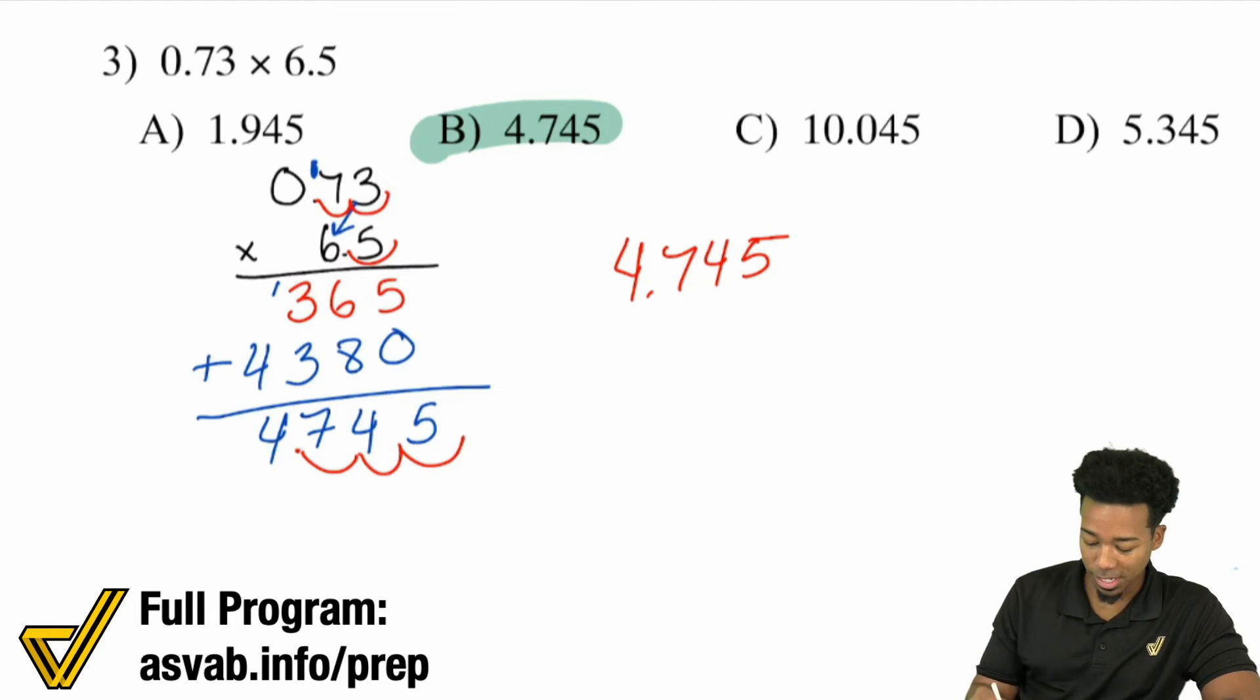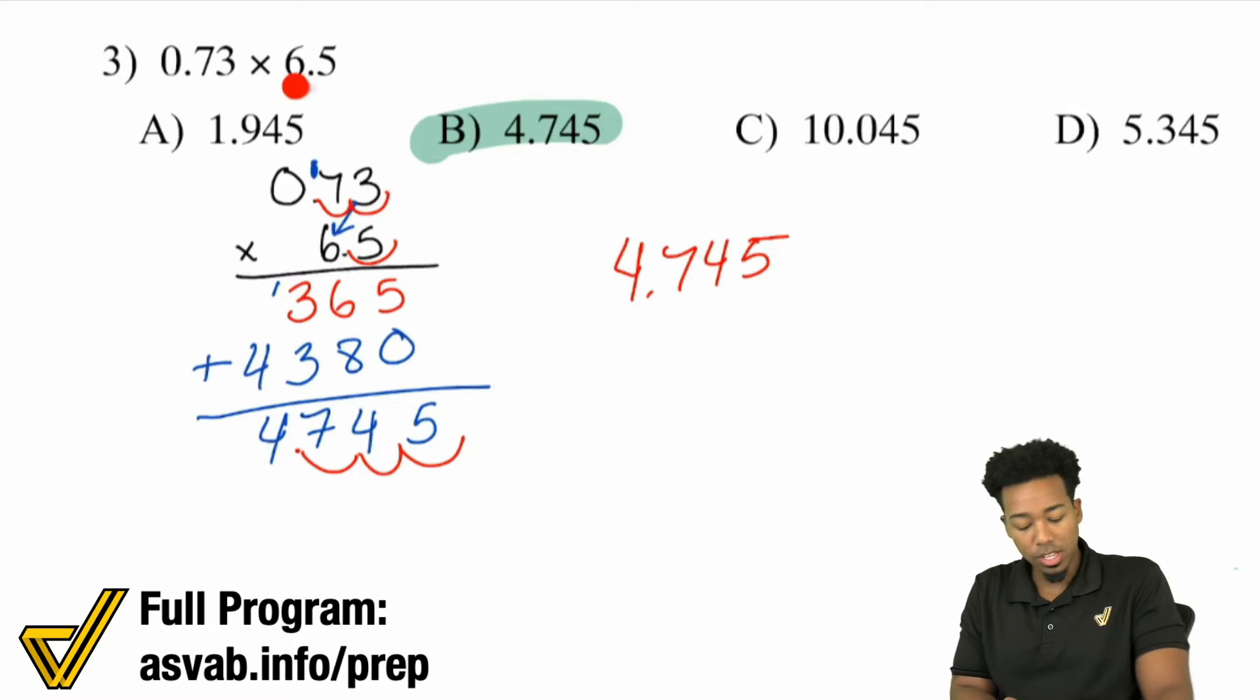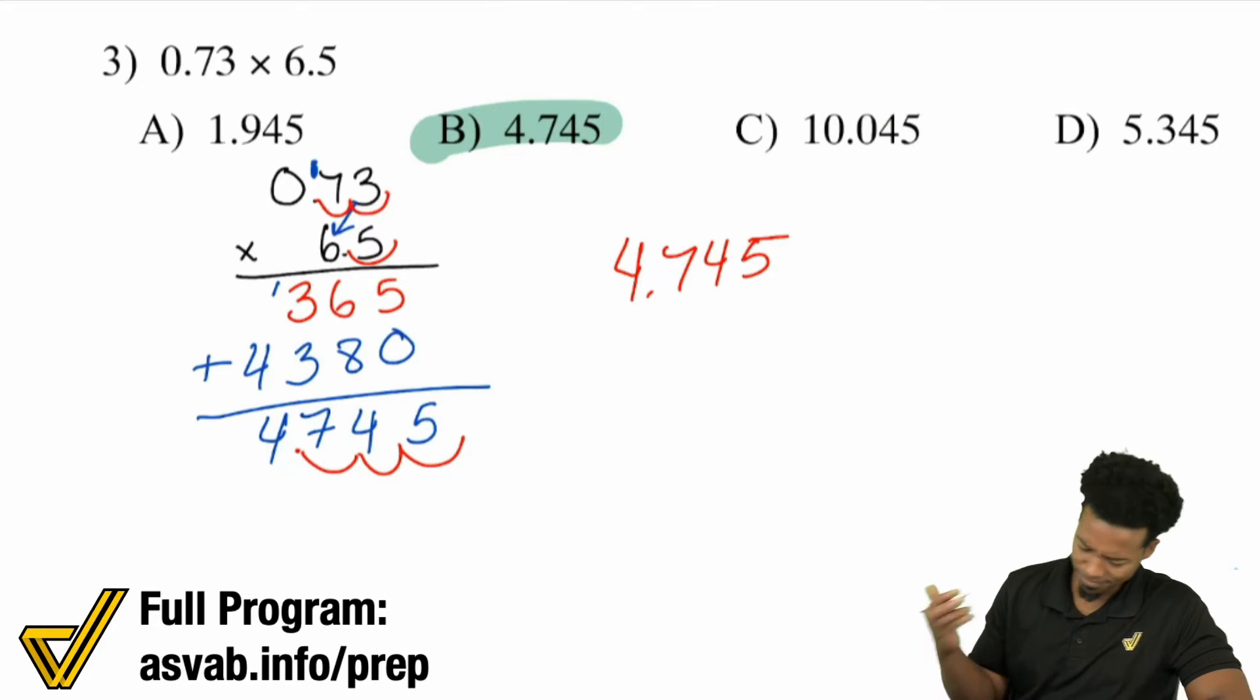Notice that you have 6.5 times a number less than 1. When you're multiplying by a number less than 1, you're going to get a smaller number than what you started with. So it's going to be smaller than 6.5. No way it could be C. I think A is a little too low because 0.73 is about three quarters, 75 percent. No way it could be that low. So you can get rid of C and A if you had to take a guess if you were desperate. But either way, let's keep it going here.